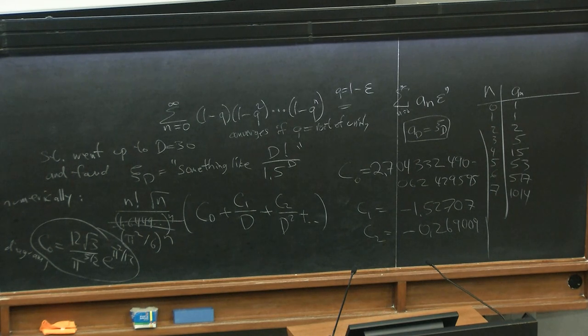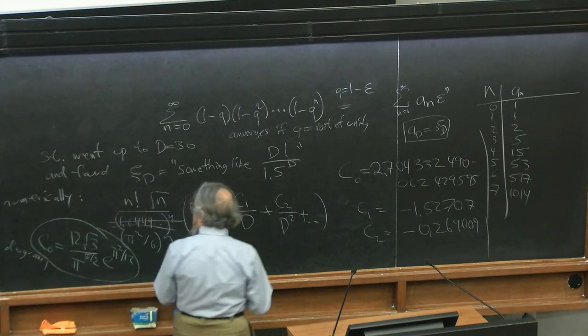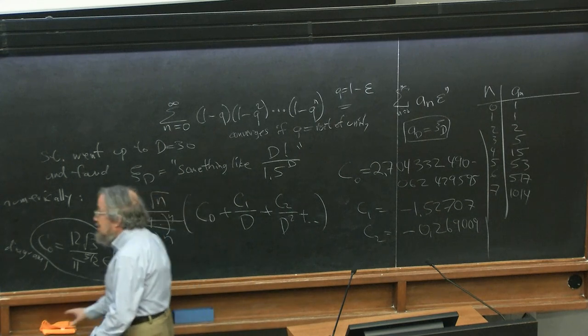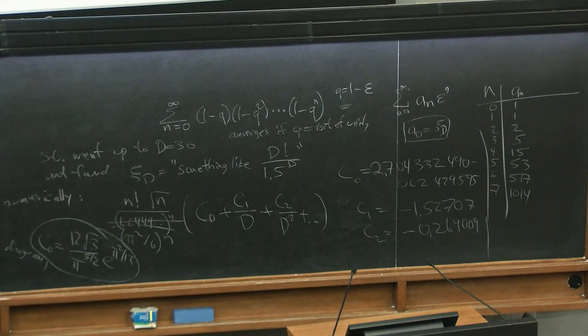After studying the numbers for many weeks and finally writing a paper relating to multiple zeta values, it turned out I could give a closed form for C_0. C_0 is exactly 12√3 / π^(5/2) times e^(π²/12). When you calculate that number on the computer, all 19 digits are correct. So the asymptotic method really works, and it's super easy to do.